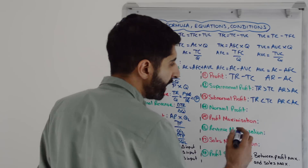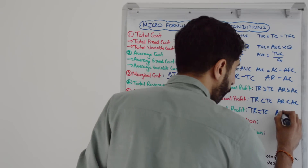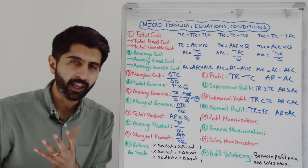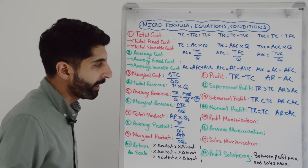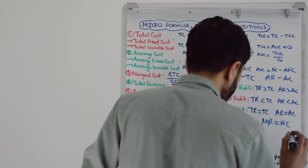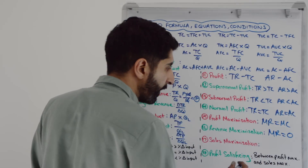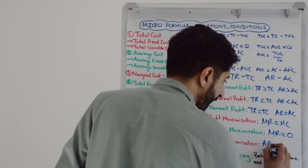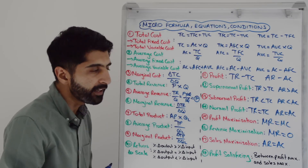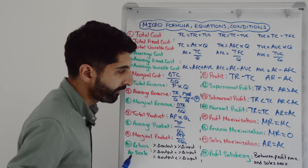Normal profit, which is breakeven in economics, is when TR equals TC or when AR equals AC. Know that normal profit breakeven is also sales maximization — it's also the limit price. Profit max occurs when MR is equal to MC. Revenue max is when MR is zero. Sales max is when AR is equal to AC — it occurs at breakeven. Profit satisficing occurs at any quantity between profit maximization and sales maximization.